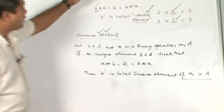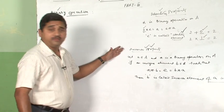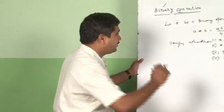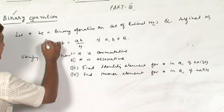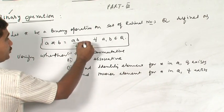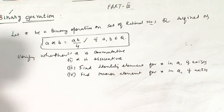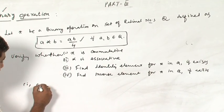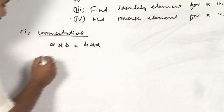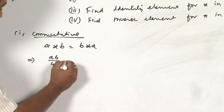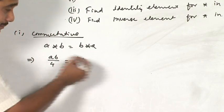These two properties — identity and inverse — are very important from an examination perspective. For a four-mark problem, these properties will definitely be required. Consider the problem: a binary operation on the set of rational numbers Q is defined as A★B = AB/4. To verify commutativity: A★B = AB/4 = BA/4 = B★A, since multiplication is commutative. Therefore, star is commutative on Q.